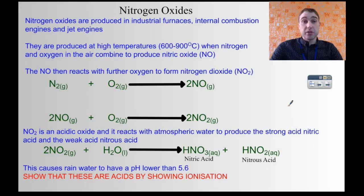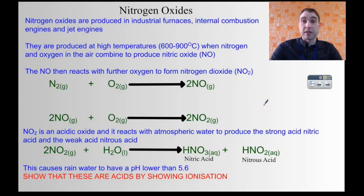Starting with nitrogen oxides — they're produced wherever you have really high temperatures. You need really high temperatures to break the triple bond between nitrogen atoms. Between the two nitrogen atoms is a very strong triple covalent bond, and you need to break that in order to get the nitrogen to react with anything. In a combustion engine, you have nitrogen reacting with oxygen to produce nitric oxide, which is NO.